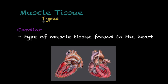Another type of muscle tissue is cardiac muscle. As the name indicates, this is the type of muscle tissue found in the heart. It is thanks to this muscle tissue that the heart is able to contract and pump blood all over your body. The heart is comprised mostly of muscle tissue, which allows it to perform that function.